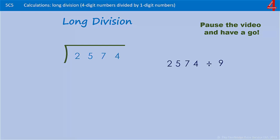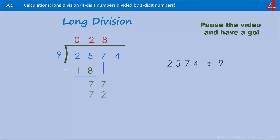2574 divided by nine. Nine won't go into two, so we're going to put a zero there. Nine into 25 — two nines are 18, so two times nine is 18. Take that 18 away from the 25, that gives us seven. Now we bring down the next digit, seven. How many times does nine go into 77? If you know your nine times table you'll know that eight times nine is 72.